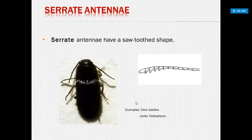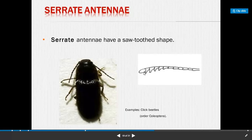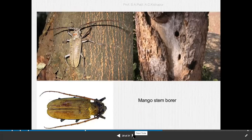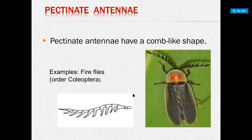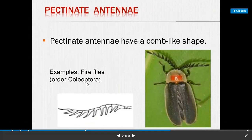Next is serrate antenna. Serrate antenna have a saw-tooth shaped, toothbrush-type appearance. Example: click beetles, order Coleoptera. Mango stem borer also has this click-type antenna. Next is pectinate antenna. Pectinate antenna have a comb-like shape. This type of antenna is present in fireflies, example order Coleoptera.